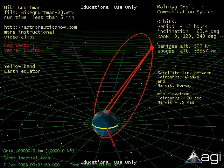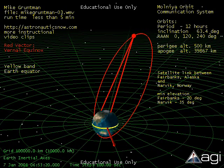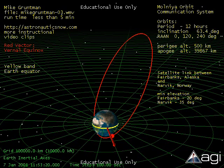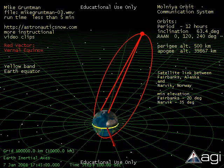We also assume that the link requires the minimal elevation angle of the satellite, 20 degrees for Fairbanks and 35 degrees for a mountainous surrounding of Narvik. The elevation angle is the angle of the satellite over the horizon as seen from an observation point.